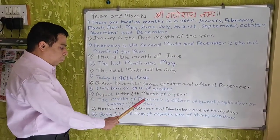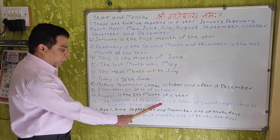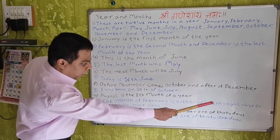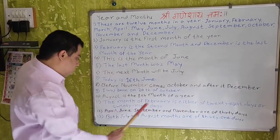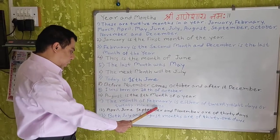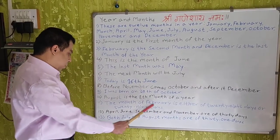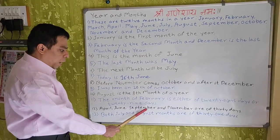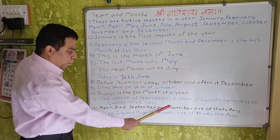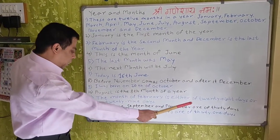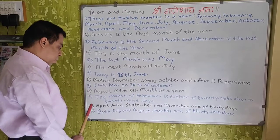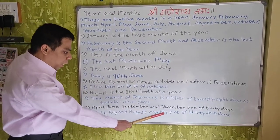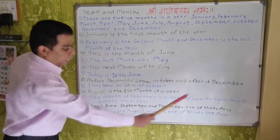The month of February is either of 28 days or 29 days. April, June, September and November are of 30 days. Both July and August months are of 31 days.